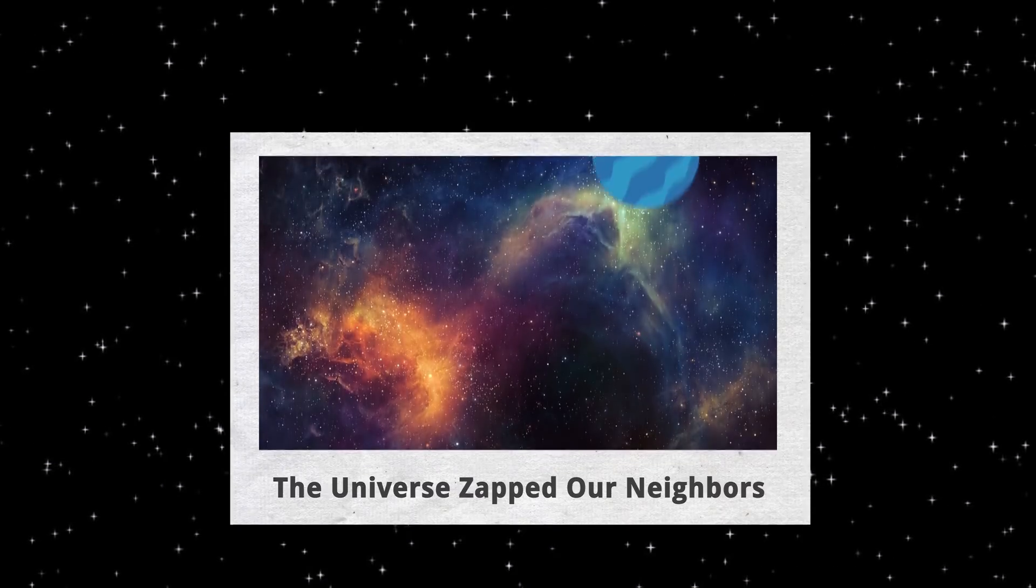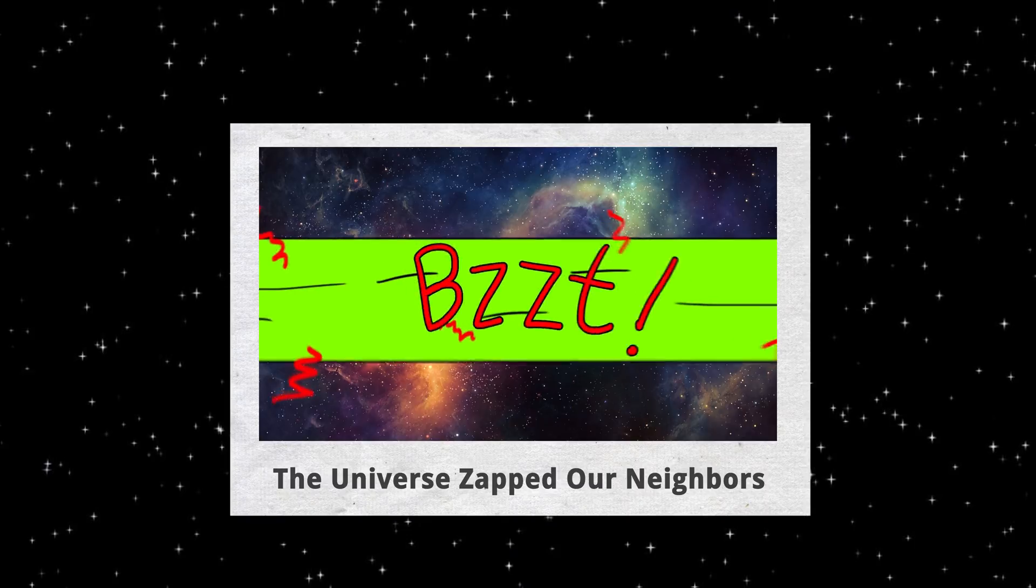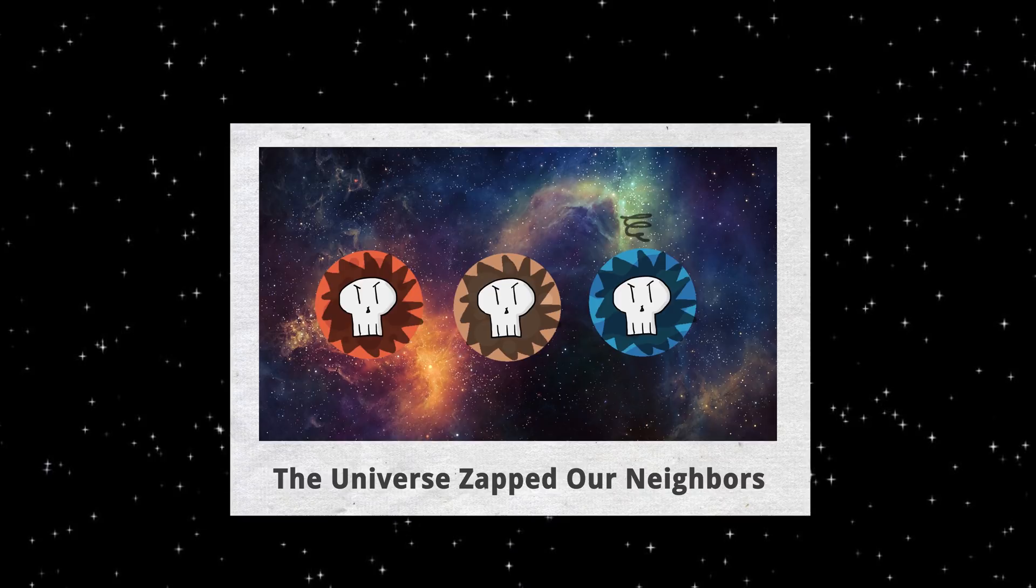The Fermi Paradox has many proposed solutions, including terrifying space phenomena like gamma ray bursts, which we've covered on this channel before. In this episode, we're going to work from the assumption that the universe is full of life and consider some of the reasons we may not be able to find it.